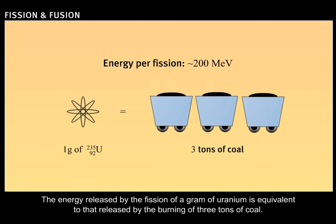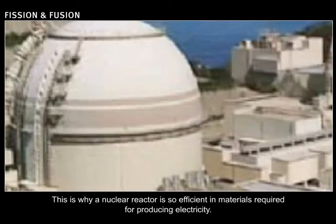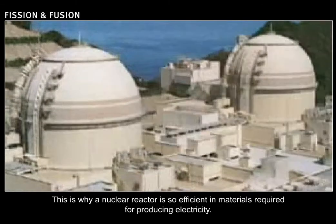Correct. The energy released by the fission of a gram of uranium is equivalent to that released by the burning of 3 tons of coal. This is why a nuclear reactor is so efficient in materials required for producing electricity.